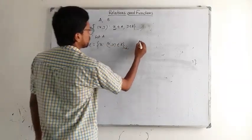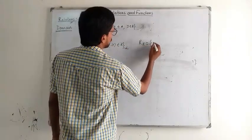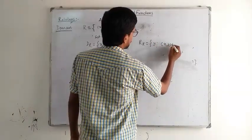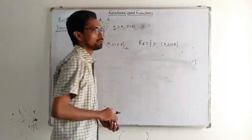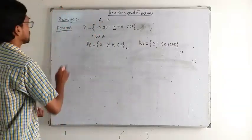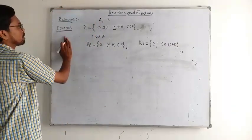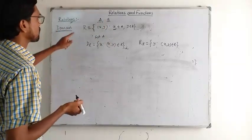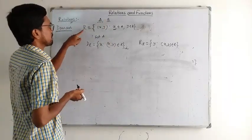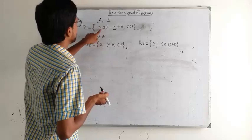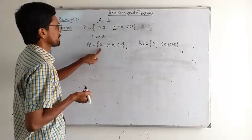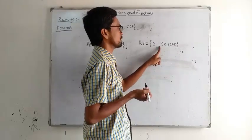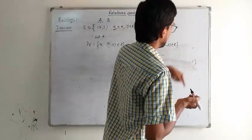What is the domain? The domain of R is the set of x such that (x, y) belongs to R. The range of R is the set of y such that (x, y) belongs to R. A cross B is equal to R, and A is the domain of R.